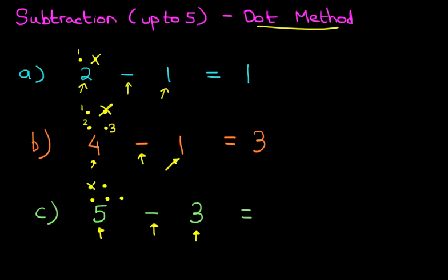Check the sign — it is minus. Now how much are we going to take away or subtract? It is 3, so this time we are going to cross out 3 dots. So let's do this: 1, so we have crossed out 1 dot. 2, and 3.